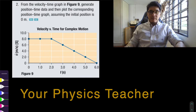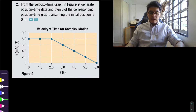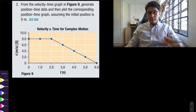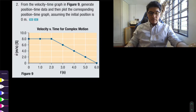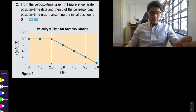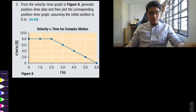Hello everyone, welcome back to your physics teacher. Today we're going to be looking at section 1.4 from the Nelson textbook, which is just looking at the different types of graphs and how we can go from one graph to the other by calculating either slopes or the area under the curve. Let's start off with question number two, which asks: from the velocity-time graph, generate position-time data and then plot the corresponding position-time graph, assuming the initial position is zero meters.